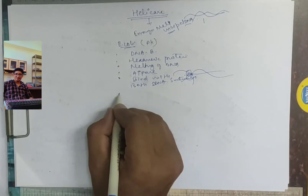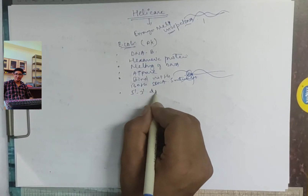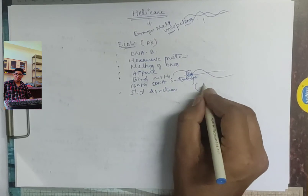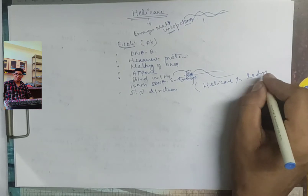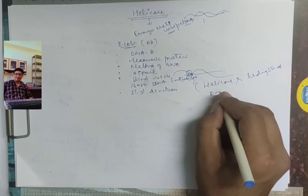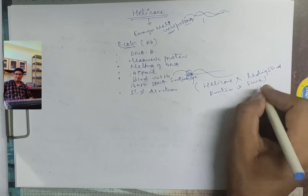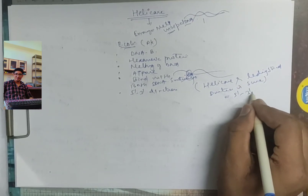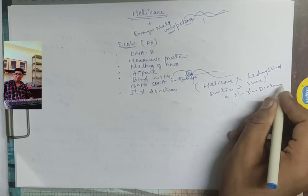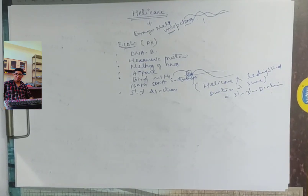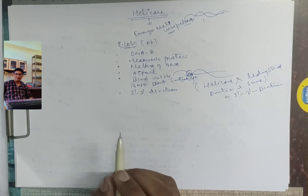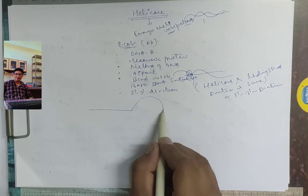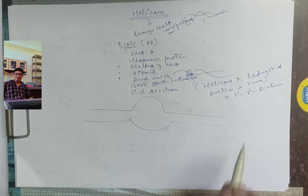Helicase moves in the direction of five prime to three prime. For the leading strand, the direction is the same: five prime to three prime. It binds with the template of the leading strand.